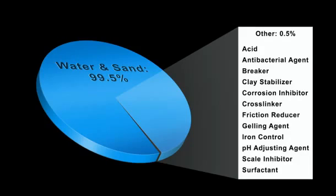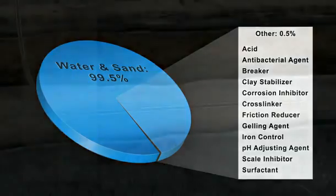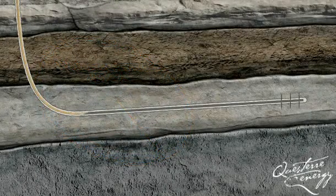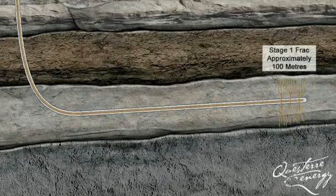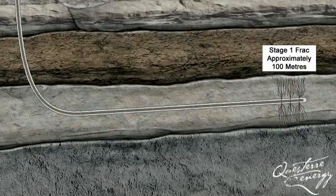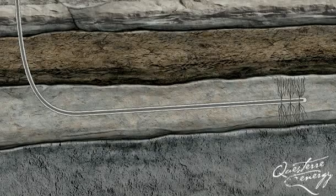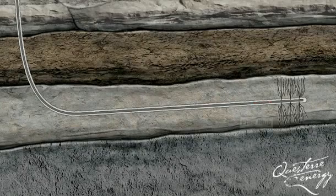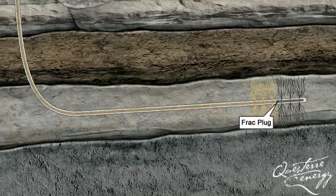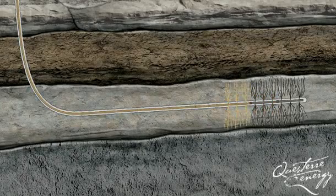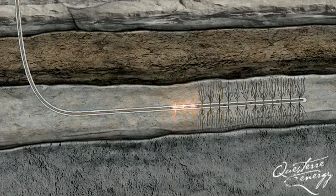The remainder consists of compounds commonly found in consumer products. As the mixture is forced out through the perforations and into the surrounding rock, pressure causes the shale to fracture. This creates a pathway connecting the reservoir to the well and allows the gas to flow to the wellbore. Next, a temporary plug is used to close off or isolate the perforated and fracked section of the wellbore, so that the next stages of the horizontal leg can be perforated and fracked.